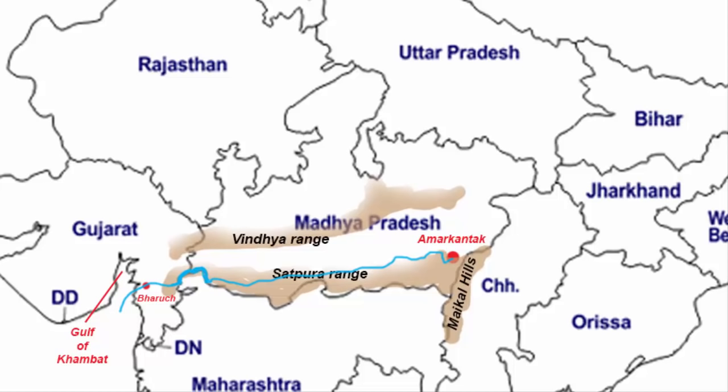It is the largest west flowing river of the peninsula. It is also known as the lifeline of Gujarat and Madhya Pradesh, for its huge contribution to both states in many ways.